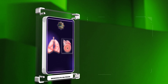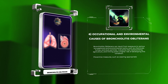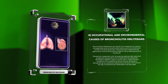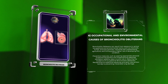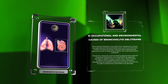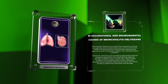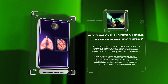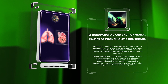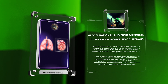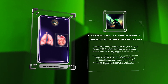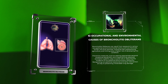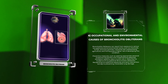Bronchiolitis obliterans can result from exposure to various occupational and environmental toxins, such as chemicals, fumes, and dust particles. Industries like metalworking, agriculture, and mining pose a higher risk of developing this condition. Preventive measures, such as wearing appropriate personal protective equipment and implementing adequate ventilation systems, play a crucial role in reducing the incidence of occupational bronchiolitis obliterans. Recognizing occupational exposures and early intervention are key to preventing irreversible lung damage.